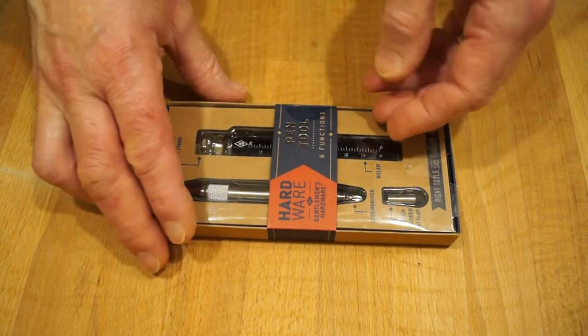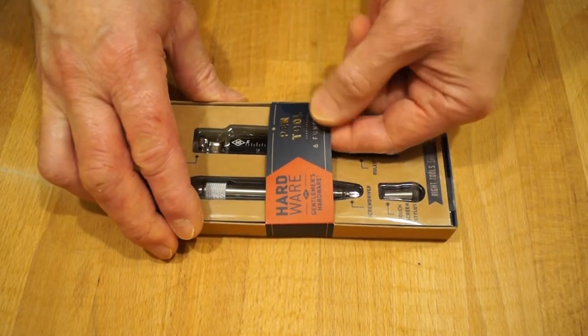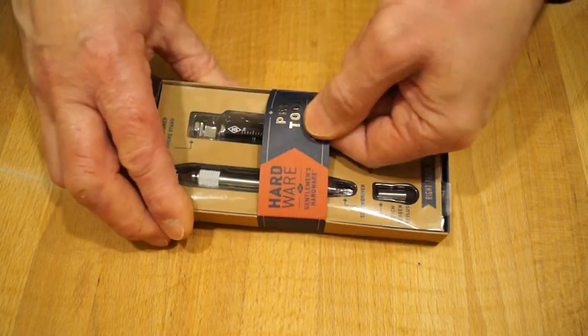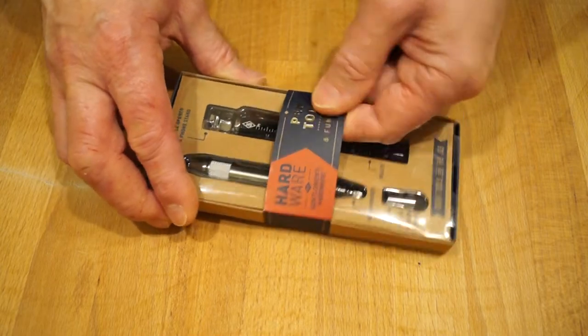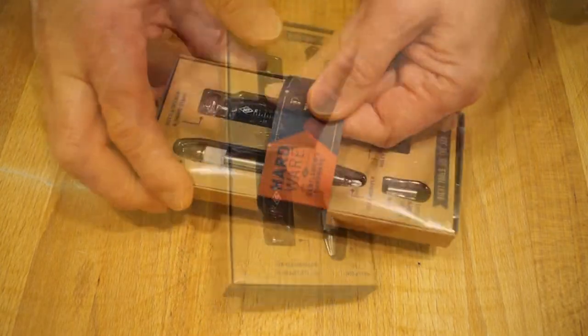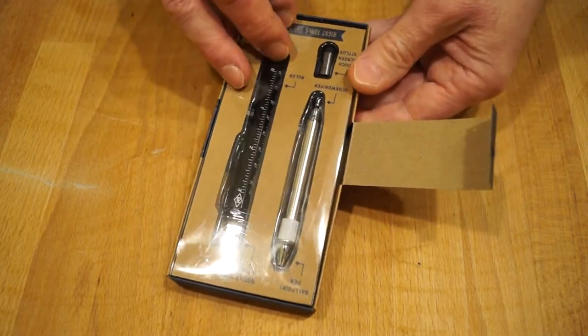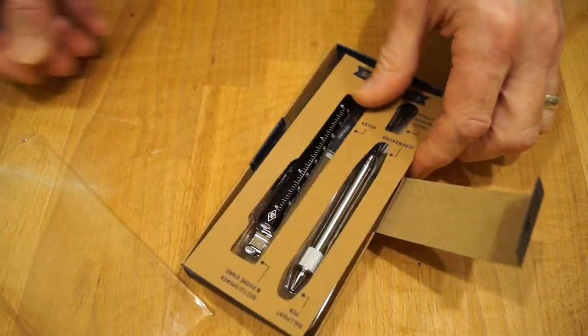My son knows that I like gadgets and gizmos so he thought I might like this. How do you get into it? Adult proof packaging guys. There we go, we're into it. Open it up like so, get all the bits out.